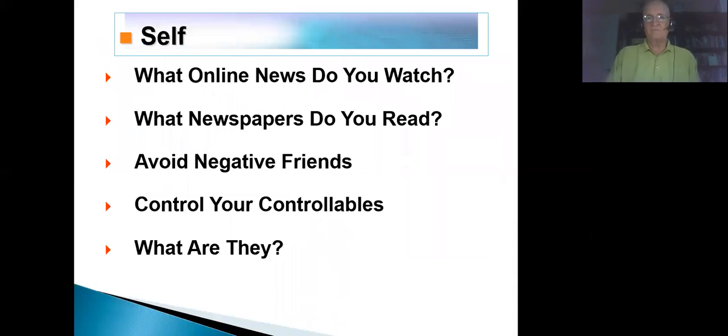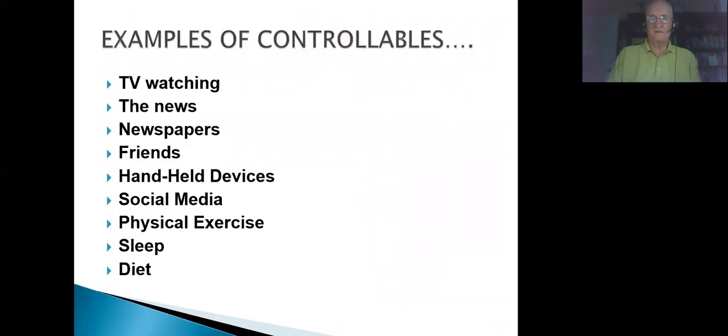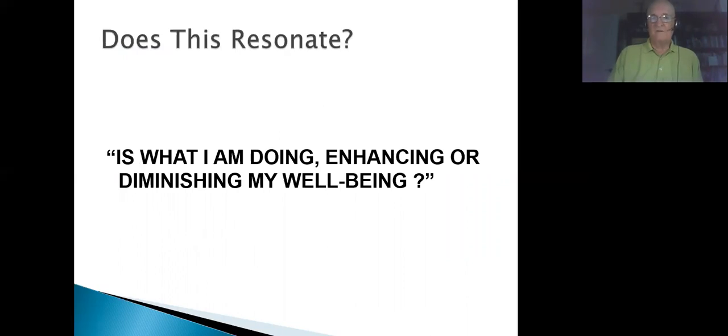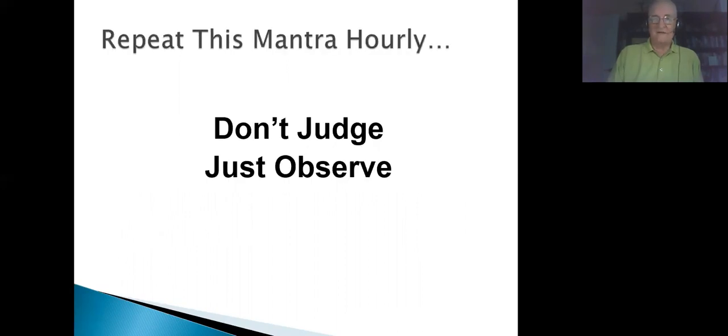What online news do you watch? What newspapers do you read? You don't avoid negative friends. You run from negative friends. And make sure they're no longer friends after tonight. Control your controllables, and what are they? Here's some examples of controllables. Movies, TV watching, newspapers, the news, friends, handheld devices, social media, physical exercise, sleep, diet. All of these things are within your realm of control. And if you don't control it, someone else will. You can rest assured, they will. That's what media does. And that's what social media does. Because they have the triggers, what we call the psychological triggers involved. Does this resonate? Is what I am doing enhancing or diminishing my well-being? That should be your comment all the time. What am I doing that's enhancing my well-being? And what's diminishing it? This is my mantra. I don't judge. I just observe.